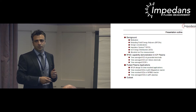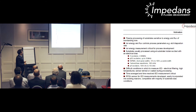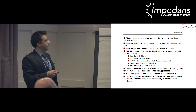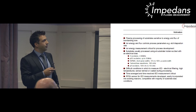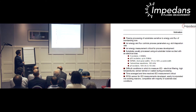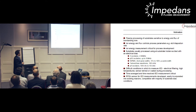The motivation: plasma processing of substrates is very sensitive to the energy and flux of bombarding ions, which control important parameters such as etch or deposition rates. Ion energy measurement has become critical for process development, especially as feature sizes become more complex. Substrates are usually processed using electrical bias, which complicates the measurement—this can be RF bias, typically in the 2 to 60 megahertz range and higher, or pulse DC excitation up to 350 kilohertz.